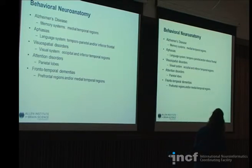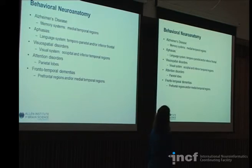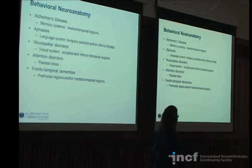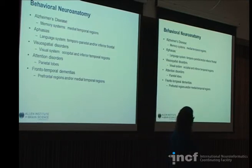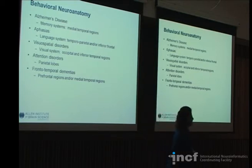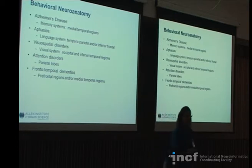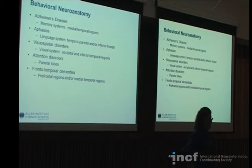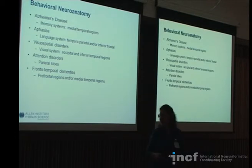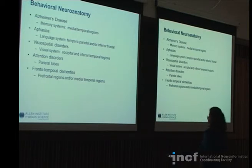The behavioral neuroanatomy of these networks follows along with disease. In Alzheimer's disease, it's the medial temporal regions that control memory functions that are affected primarily and early on. Aphasia is the language system — you have disruption of that network between the temporal-parietal region and the frontal region. Visual-spatial disorders affect regions of visual cortex back in the occipital and parietal and inferior lobes. Attentional disorders show up with damaged parietal lobes. Frontotemporal dementias affecting prefrontal regions can give you a wide range of behavioral problems — from wearing cow suits to lacking perception of how you appear to the outside world.